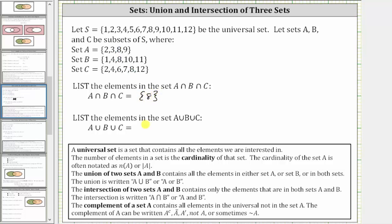Next, we're asked to list the elements in the set A union B union C, where the union of two sets A and B contains all the elements in either set A or set B, or in both sets. Because we have the union of three sets, we are looking for elements in set A, or set B, or set C, or elements in two or three of the sets. We can think of combining these three sets, but we don't list any duplication of elements.